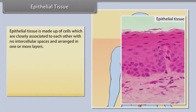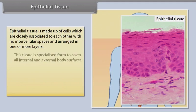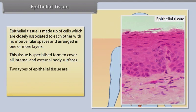Epithelial tissue. Epithelial tissue is made up of cells which are closely associated to each other, with no intercellular spaces, and arranged in one or more layers. This tissue is a specialized form to cover all internal and external body surfaces. The two types of epithelial tissues are simple epithelium and compound epithelium.